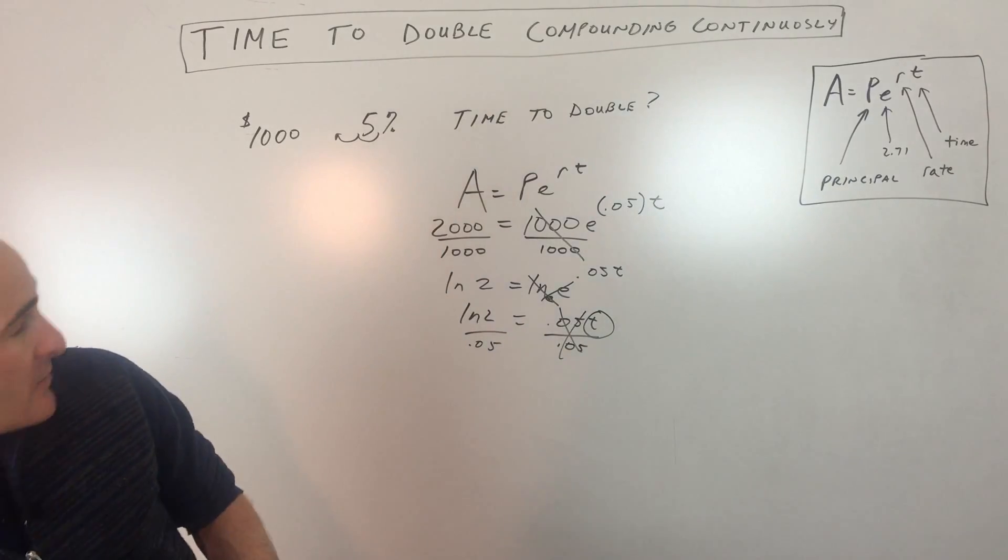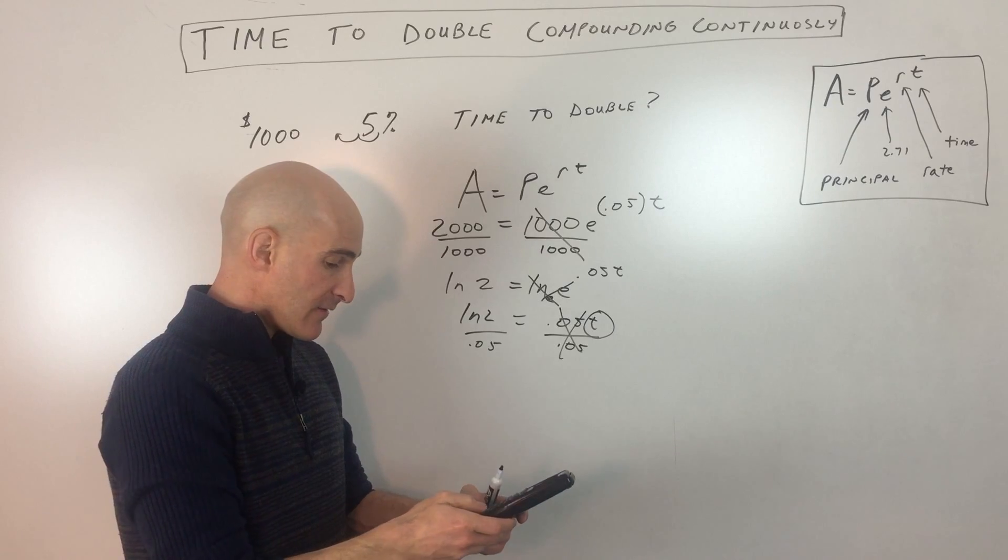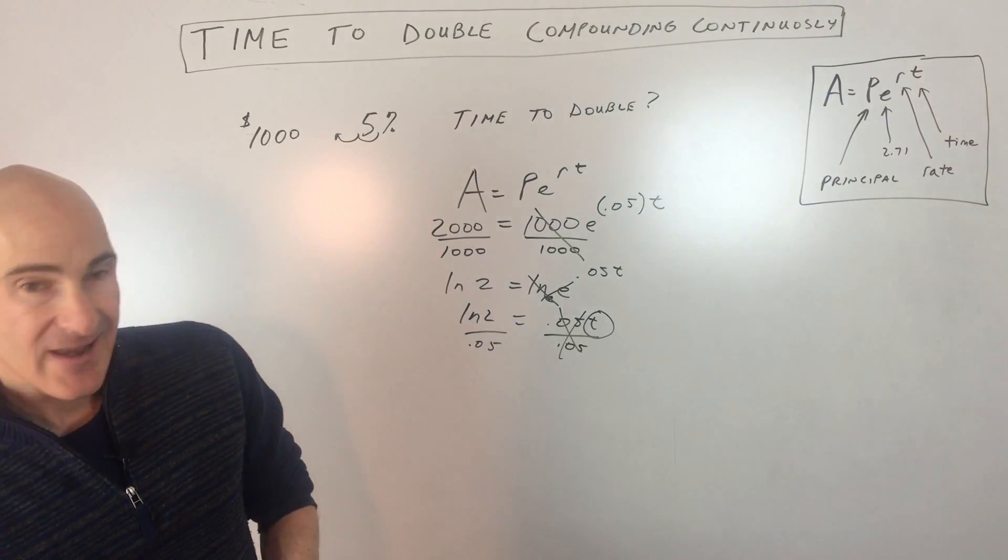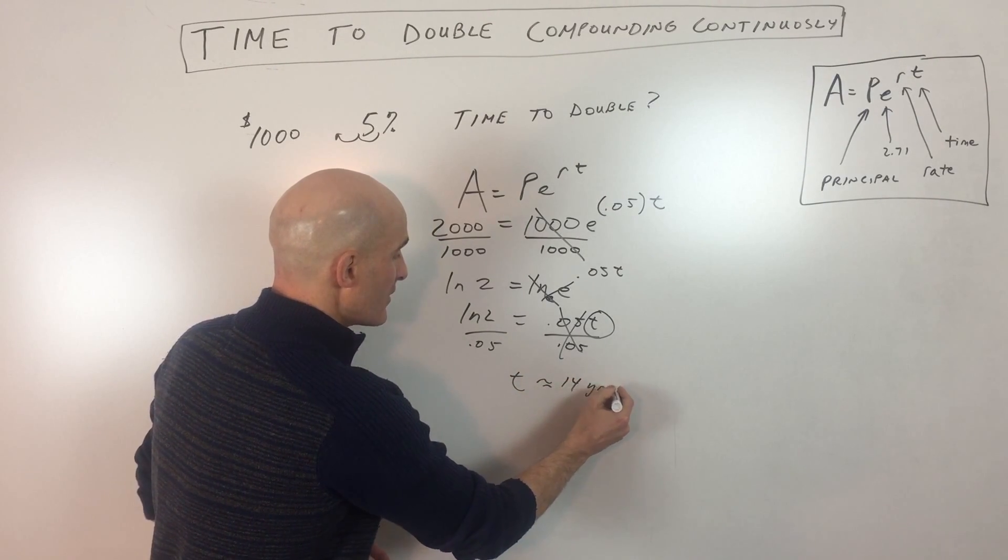Let's go to the calculator. Let's see what that comes out to. Natural log of 2 divided by 0.05, and we're getting about 13.9 years.